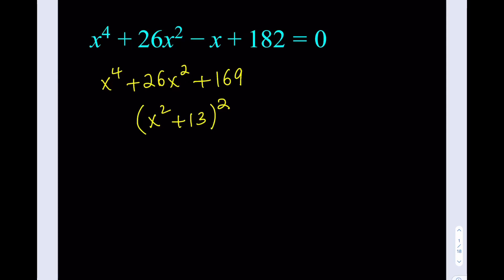For the rest of the expression, I can add 169 and subtract it, which is equivalent to breaking down the 182 since 182 is greater than 169. So I can just go ahead and proceed: minus x plus 13, which is equal to zero.